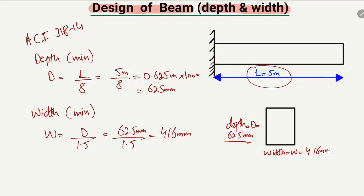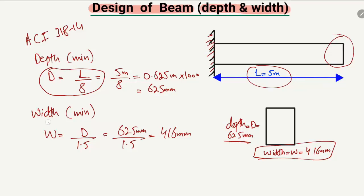This is the code requirement: if you have a cantilever beam with only a fixed support and the other end is free, you can find the minimum depth using the formula L/8 and the minimum width using depth/1.5. In our case, with a beam length of 5 meters, the depth is 625 mm and the width is 416 mm.